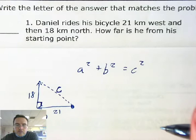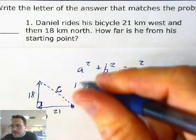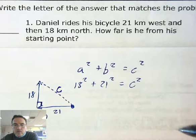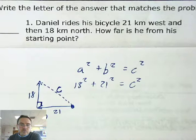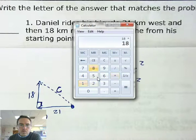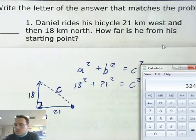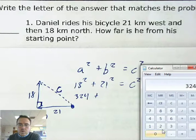I'll write a² + b² = c². I know a and b are 18 and 21, so I'll replace those: 18² + 21² = c². 18 times 18 is 324, and 21 squared — 21 times 21 is 441.